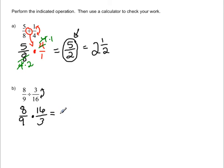So we just need to go ahead and multiply straight across. And 8 times 16 is going to give me 128. And in my denominator, 9 times 3 is going to give me 27. And so again, fine to just leave it as the improper fraction. And in fact, that's preferred.